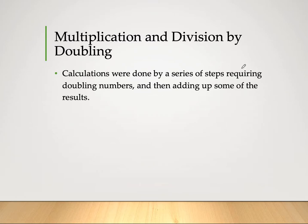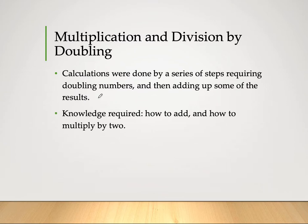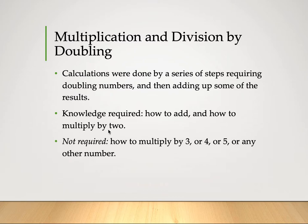Calculations were done by a series of steps requiring doubling numbers — that is, multiplying by two — and then adding up some of the results. The only knowledge required is how to add and how to multiply by two. What is not required is how to multiply by three, four, five, or any other number. All we need is doubling.